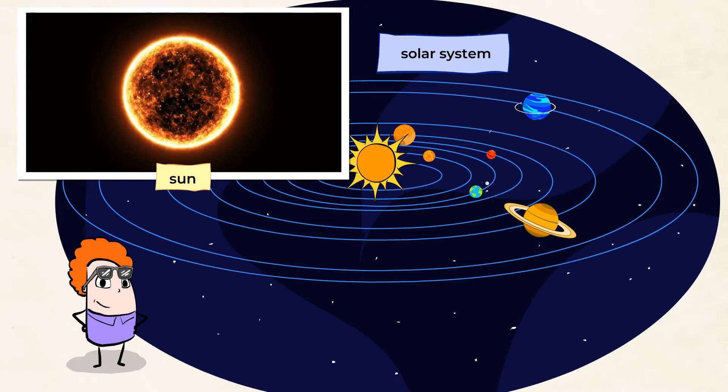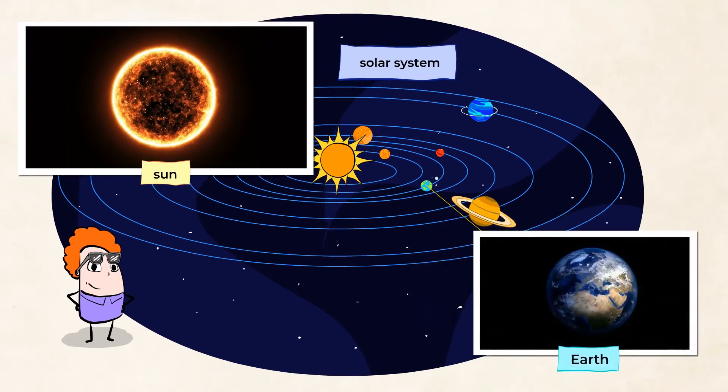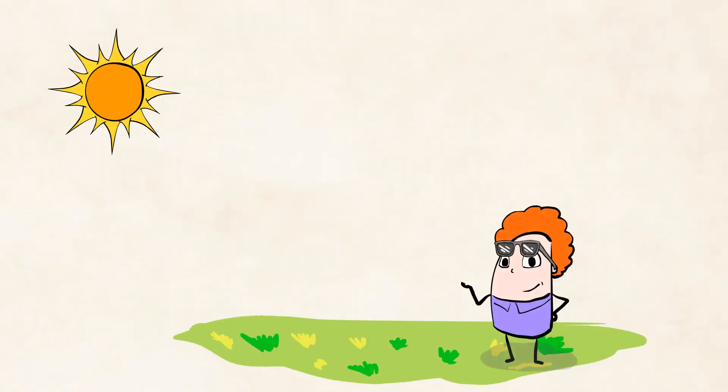And one of those planets is Earth. Here it is. Ah, breathtaking. The sun is very important to everything that lives on our planet, and of course to us, too. It gives off light and heat that we call sunlight.